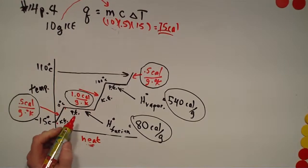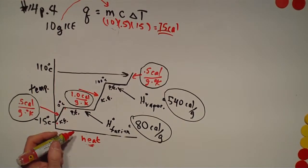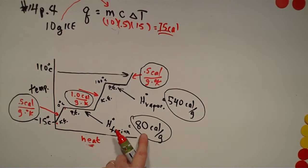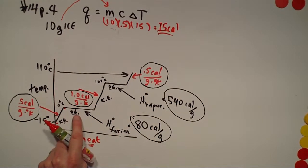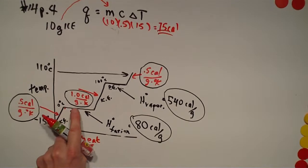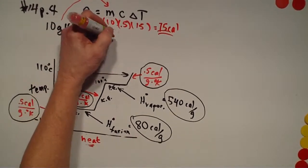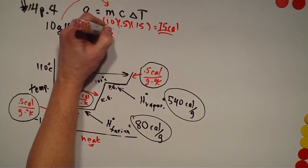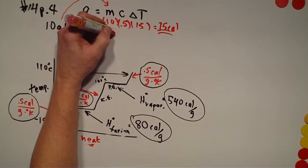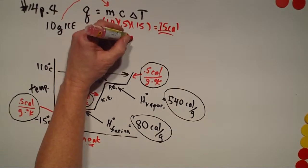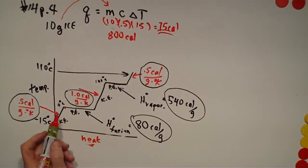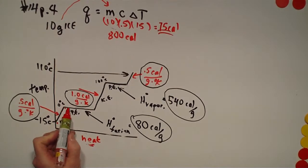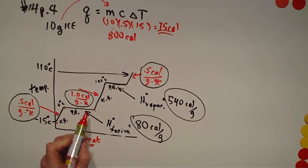Now from here to here — the melting phase. For every gram we have to add 80 calories, and we have 10 grams, so it's going to be 80 × 10 = 800 calories. That was very easy to figure out — just 10 times 80 to melt the ice completely.